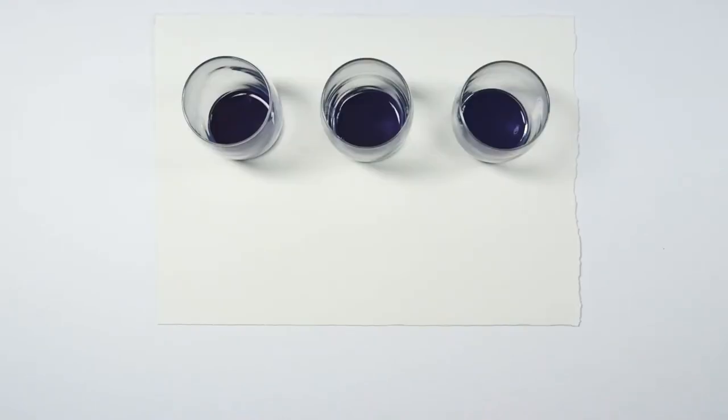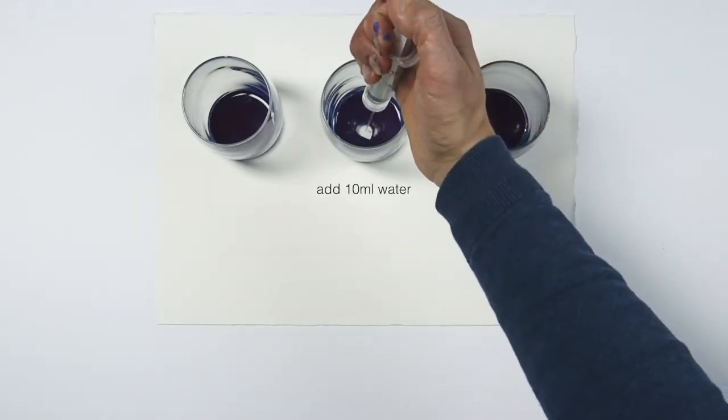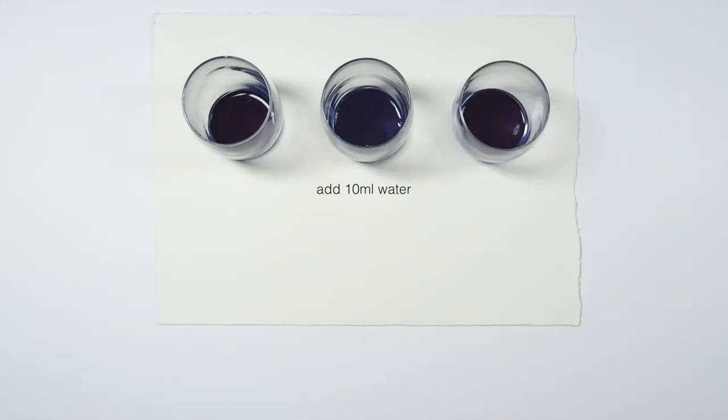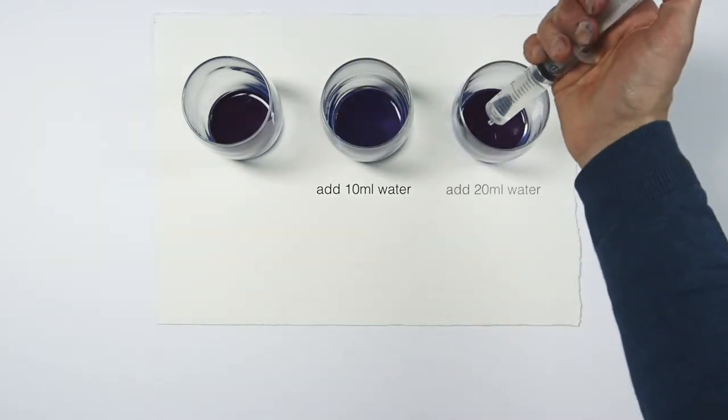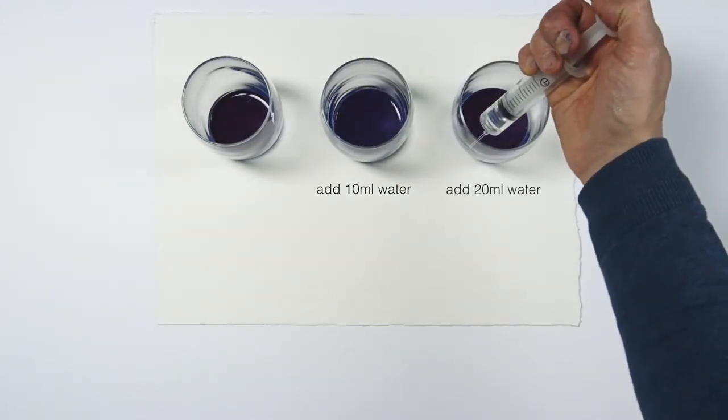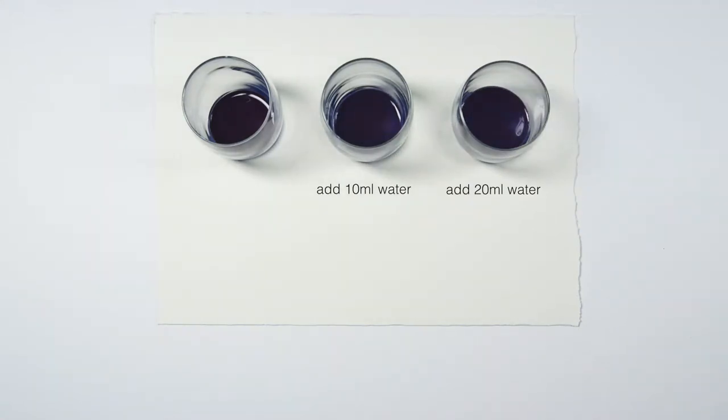Here we have three glasses each with 10 milliliters of paint. I'm going to dilute the second glass with 10 milliliters of water and the third with 20. So now we have three sets of paint all the same color, just three different tones from dark to light.